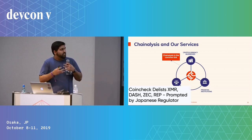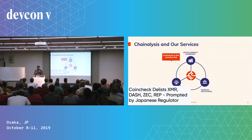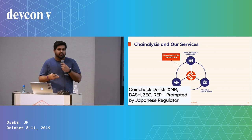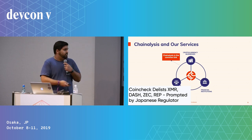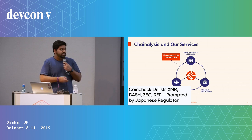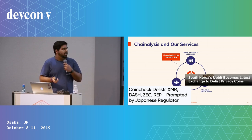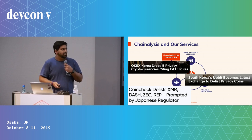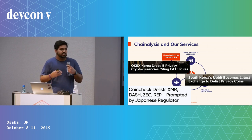We found that the space doesn't grow because each party doesn't feel comfortable with what's being provided. Over-regulation occurred in Japan and Korea related to exchange hacks, causing privacy coins to be delisted. CoinCheck had to delist privacy coins, then South Korea followed with stricter regulations. Our goal is to provide tools that make regulators feel comfortable with these currencies.